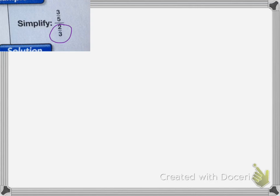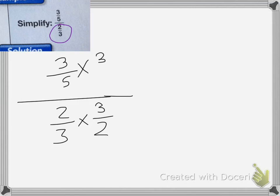To change a fraction to 1, we're going to multiply it by the reciprocal. So I'm going to take 3 fifths over 2 thirds, and I want to multiply the denominator by the reciprocal, which is 3 over 2, because that will eventually equal 1. And whatever I do to the bottom, I have to do to the top as well. So I'm going to multiply the top by 3 halves as well.